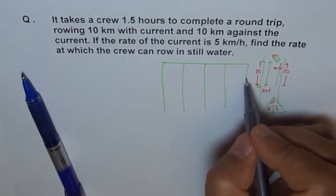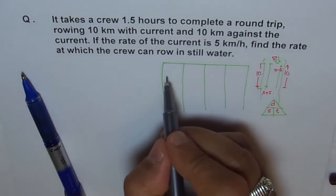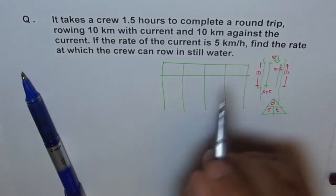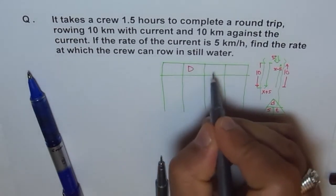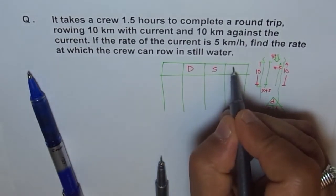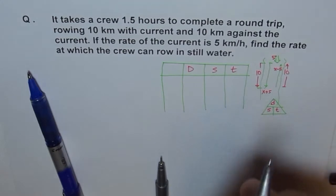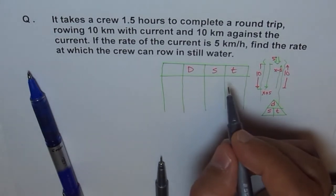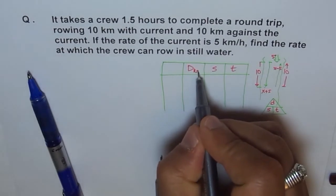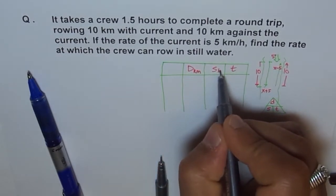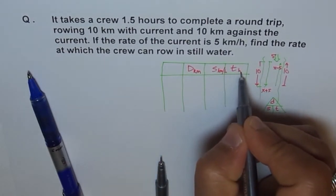So, we will make a table for the given conditions. So, what we know here is a couple of things. First, we have to find a relation between distance, speed, and time. So, we will make a table with this like this and write here distance. I am writing distance as D, speed as S, and time as T.